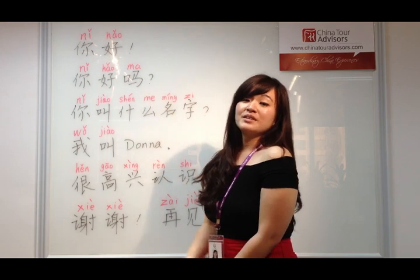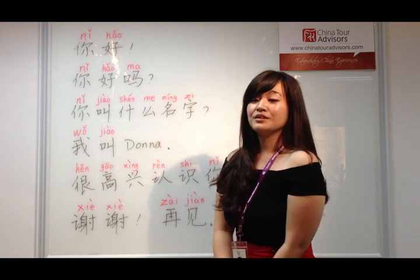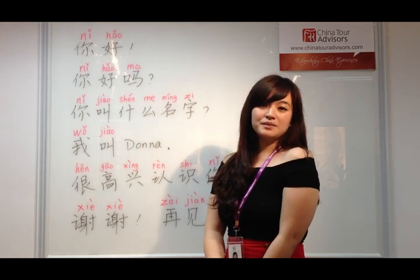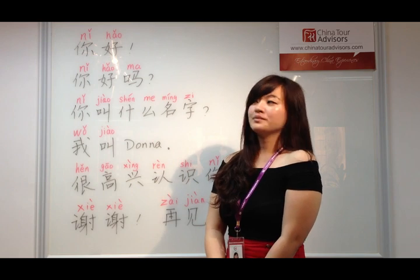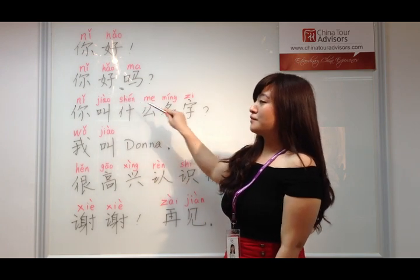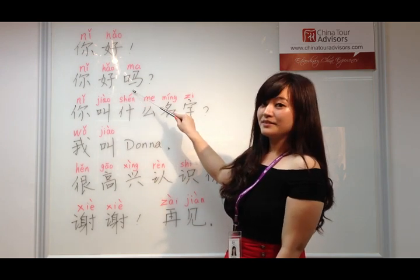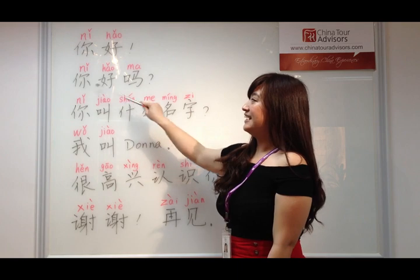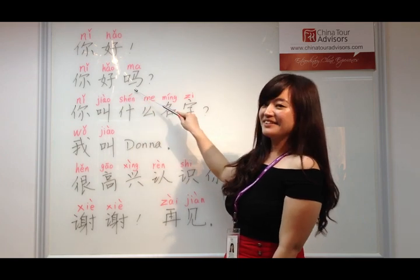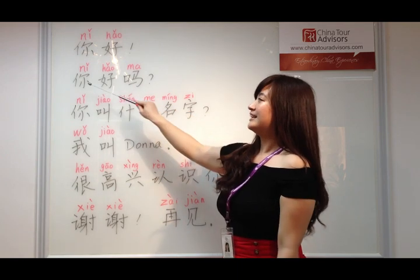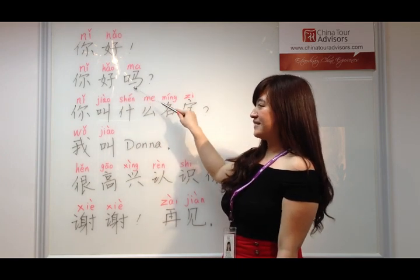Once you've said your hello, you probably want to ask 'How are you?' So how do we say 'how are you'? We say 你好吗. Repeat after me: 你好吗. One last time: 你好吗.